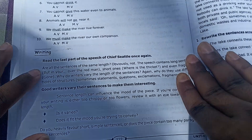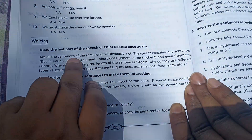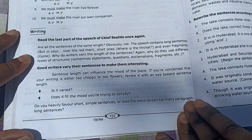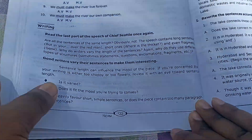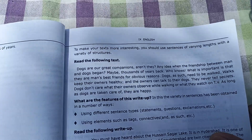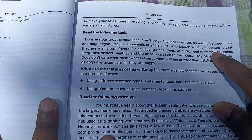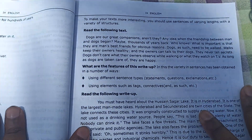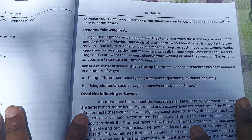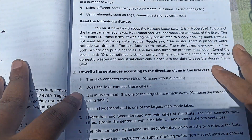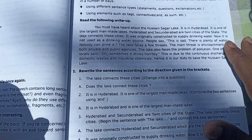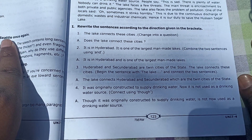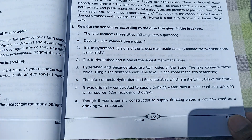This is the writing skills section. The task is: read the last part of the speech of Chief Seattle once again. There are writing exercises here — match the given rights, and also write sentences according to the directions given in the brackets. The answers are provided for both exercises.